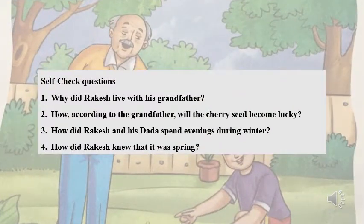Now let's have the self-check questions. Try answering these questions: Why did Rakesh live with his grandfather? How, according to his grandfather, will the cherry seed become lucky? How did Rakesh and his grandfather spend evenings during winter? How did Rakesh know that it was the spring season?